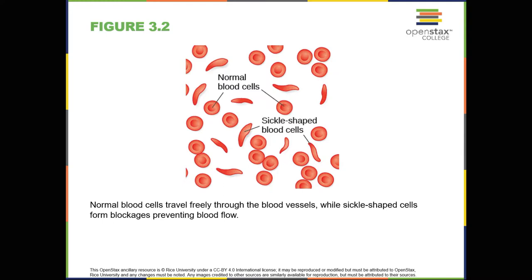Sickle cell anemia is a genetic condition in which red blood cells, which are normally round, take on a crescent-like shape, as seen in Figure 3.2. The changed shape of these cells affects how they function. Sickle-shaped cells can clog blood vessels and block blood flow, leading to high fever, severe pain, swelling, and tissue damage. Many people with sickle cell anemia, and the particular genetic mutation that causes it, die at an early age.